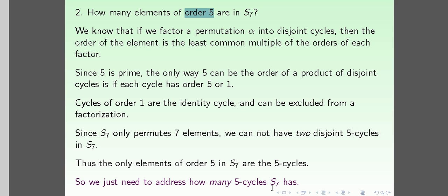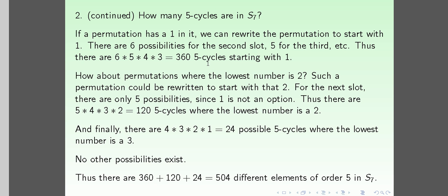So the only elements of order 5 in S7 are the 5-cycles. We just need to count how many 5-cycles S7 has. If a permutation contains 1, we can rewrite it to start with 1. Then there are six possibilities for the second slot, five for the third, and so on — giving 6×5×4×3 = 360 five-cycles starting with 1.